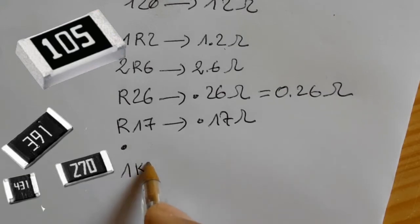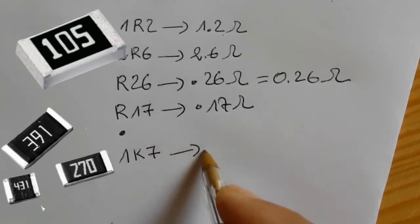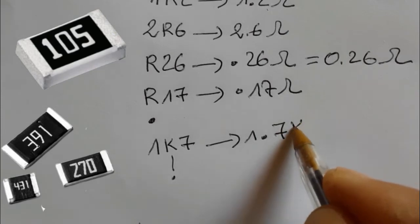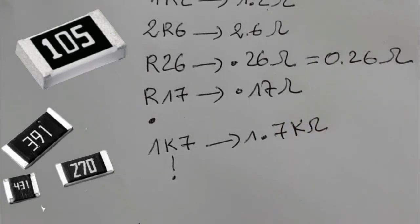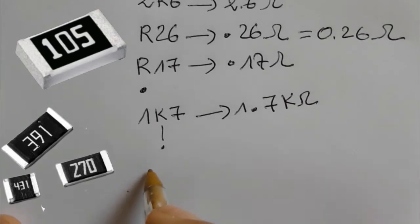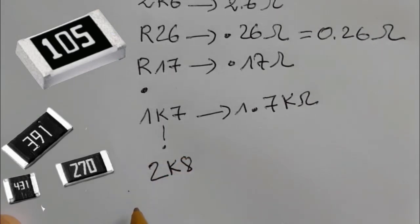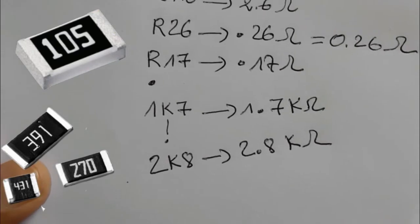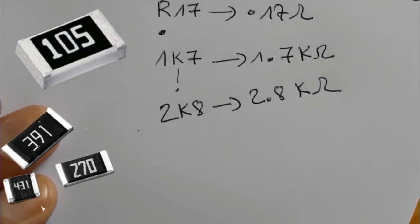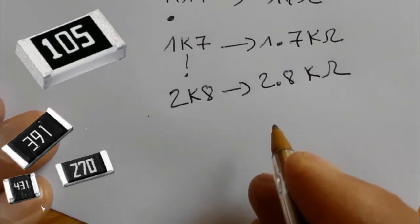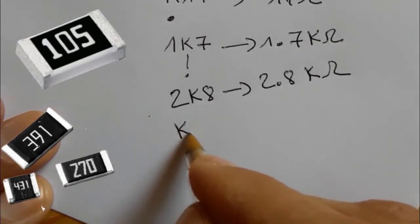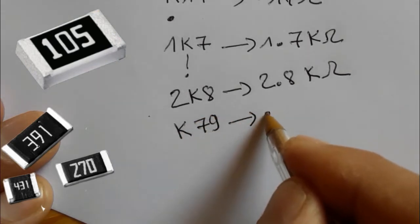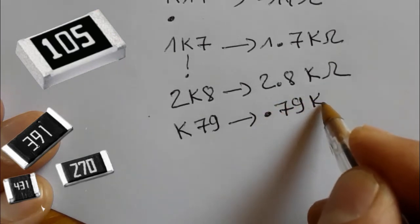The K notation works the same way but for kilo-ohms. For example, 1K7 means 1.7 kilo-ohms, 2K8 means 2.8 kilo-ohms, and K79 means 0.79 kilo-ohms because it begins with K — the same working principle.